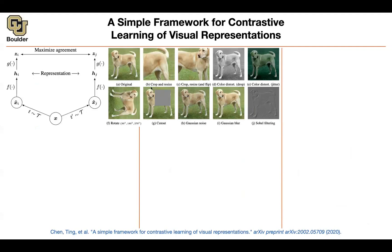Perhaps crop and resize, flip, distort the color, do Sobel filtering — which is differentiating to find the boundaries of your objects. You take your image, push it to the right, and find the difference, giving you your images like this. Add Gaussian noise, cutout, rotation, etc.